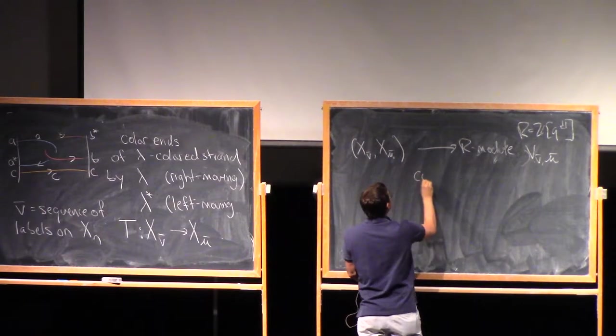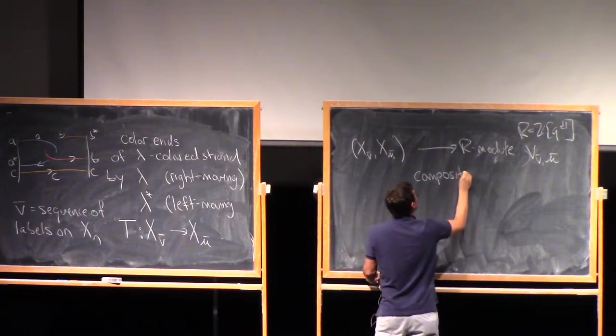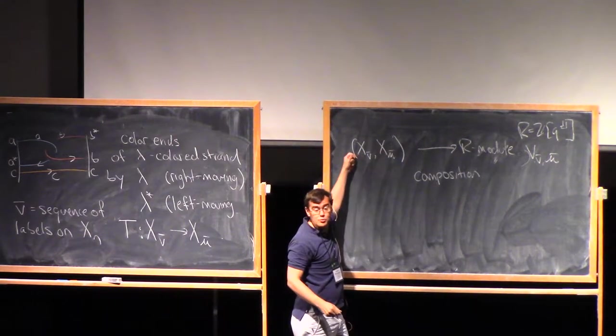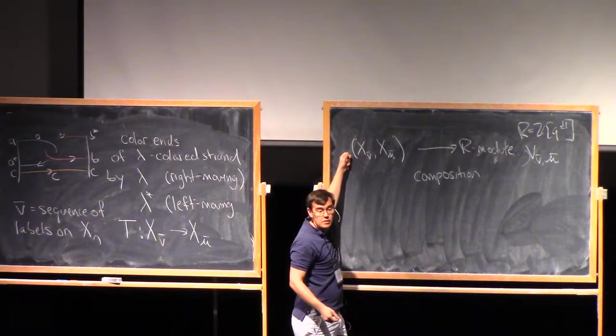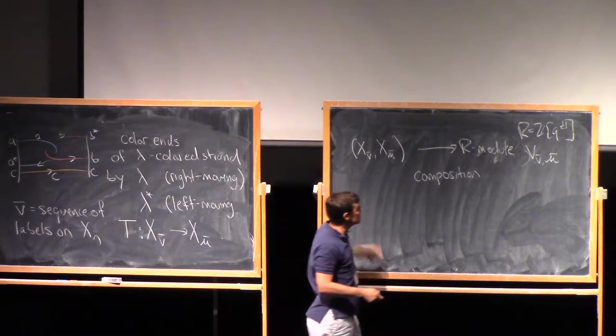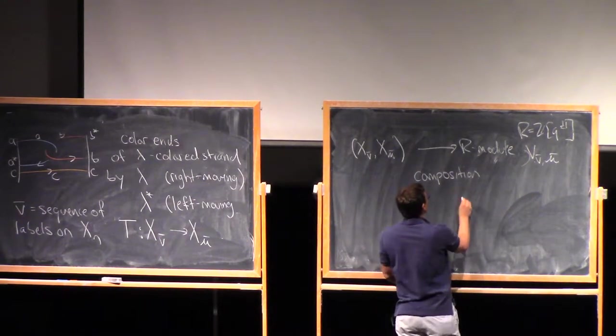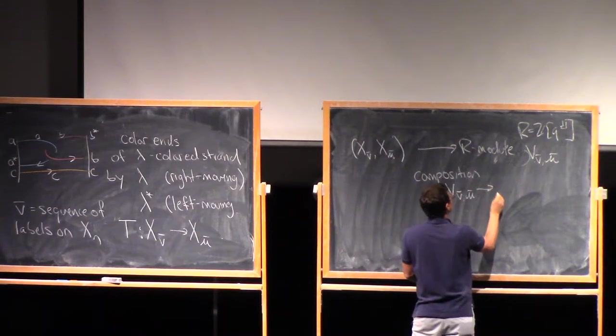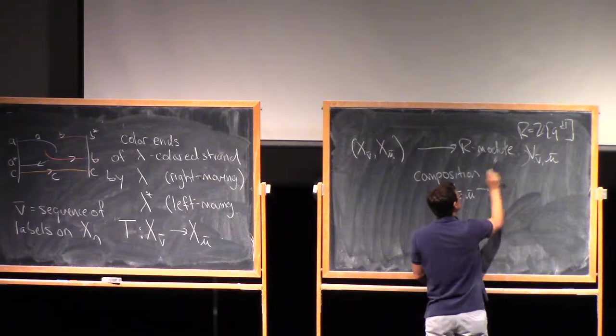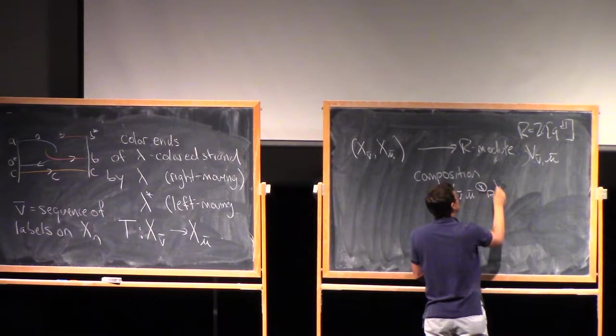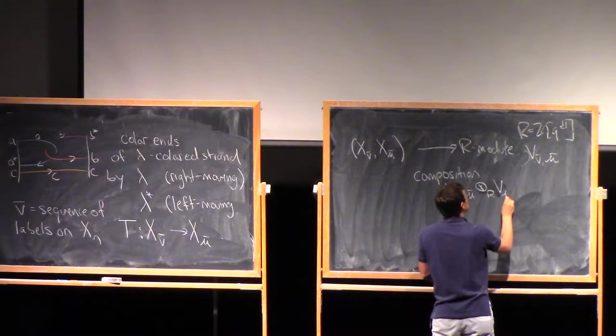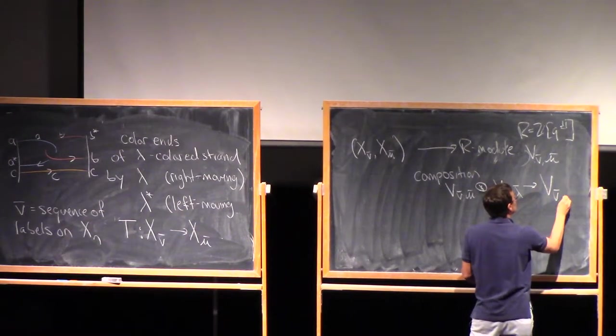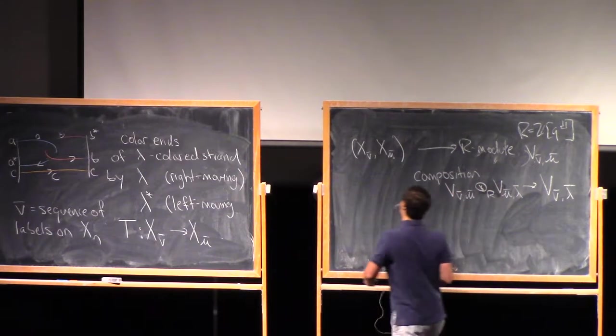And similarly, I'll say mu bar over here. So I'll write this tangle as being T, going from x nu bar to x mu bar. And then what we have is, to the pair x nu bar, x mu bar, I get a vector space, or I guess an R module. So again, r is this ring Z adjoin q plus or minus 1. And let's call that v nu bar mu bar.